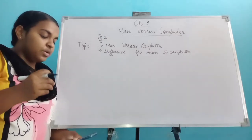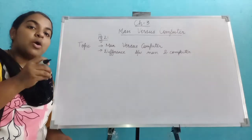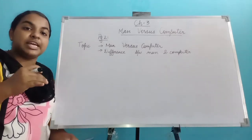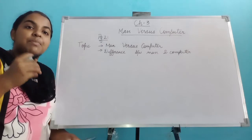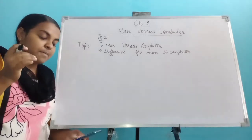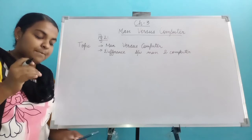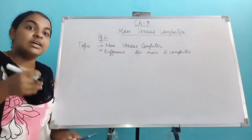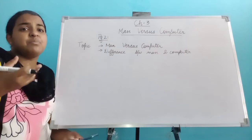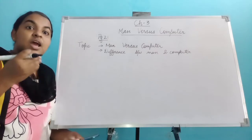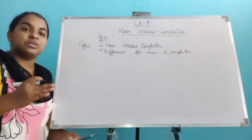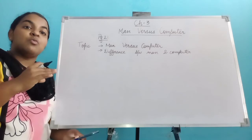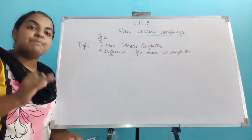Here we have seen the argument of the boy and girl. In the third part, we can see the argument by the computer itself: 'But still I am better than you.' The computer is saying that even if man made it, it is still better than man.